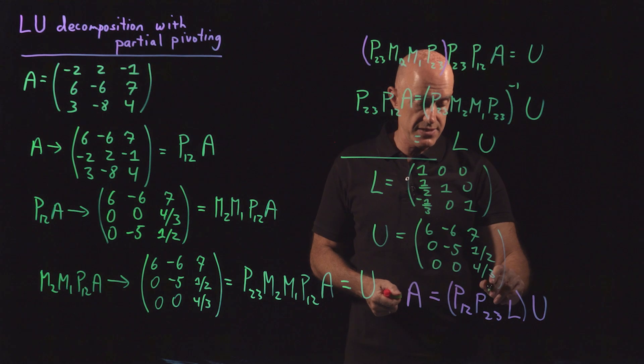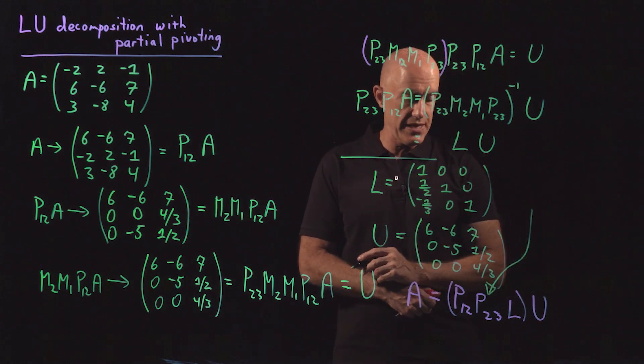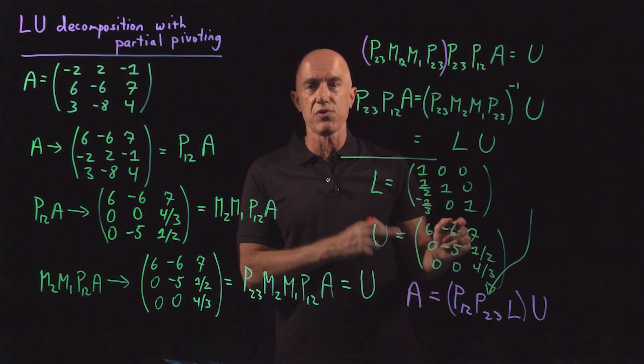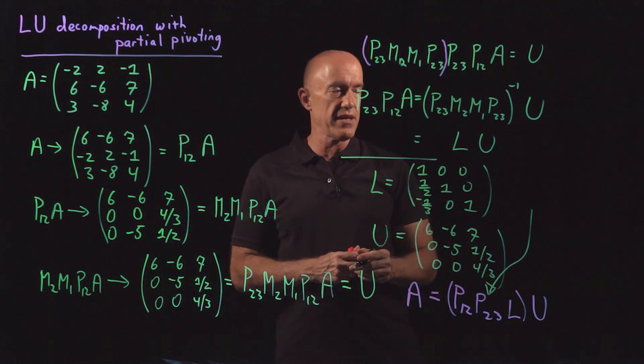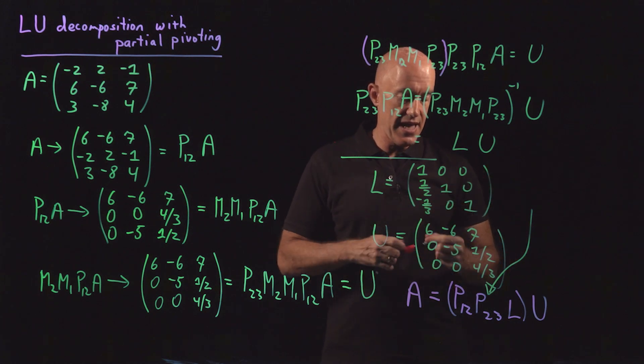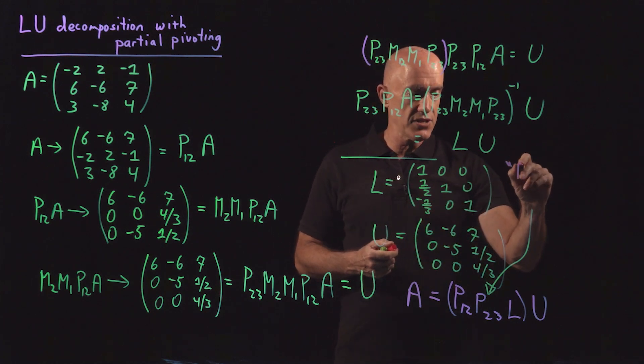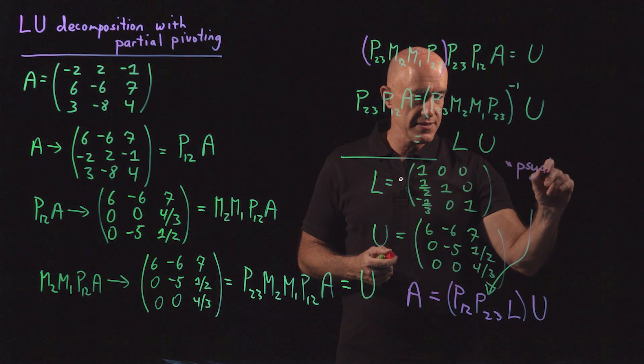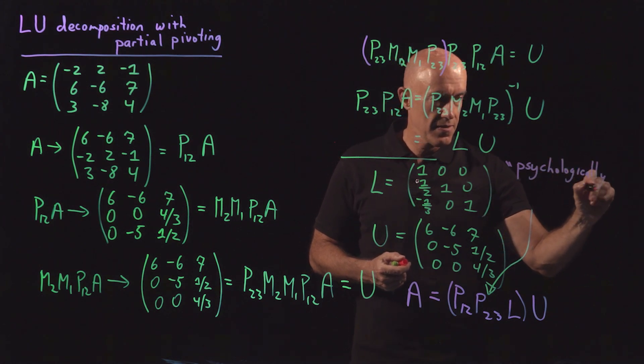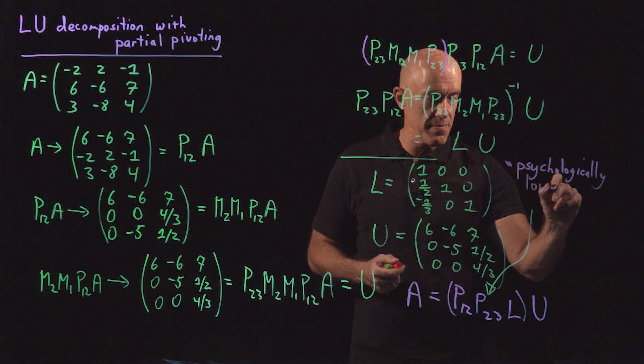What MATLAB says, which is probably the only place in the world that says that, except now I'm repeating it, is that this lower triangular matrix, which is a permutated lower triangular matrix. They use this phrase, this is a psychologically, if I can spell it, psychologically lower triangular matrix.